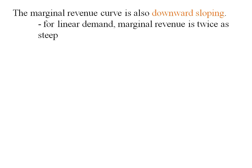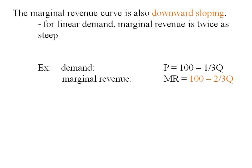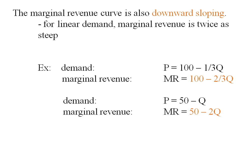When you have a linear demand, your marginal revenue is going to be twice as steep. So if my demand is P equals 100 minus one-third Q, marginal revenue is going to be 100 minus two-thirds Q. If demand is P equals 50 minus Q, then marginal revenue is 50 minus 2Q.